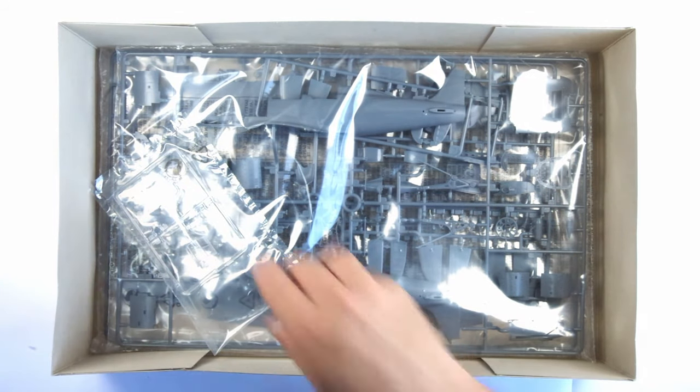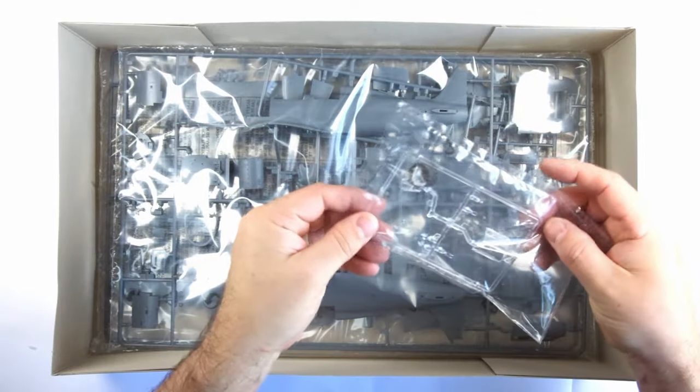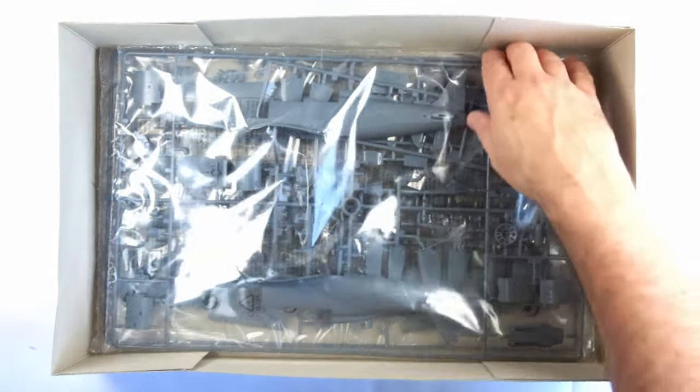On top is the separately bagged transparency sprue. And then underneath them are two large bags containing the main paired sprue frames.